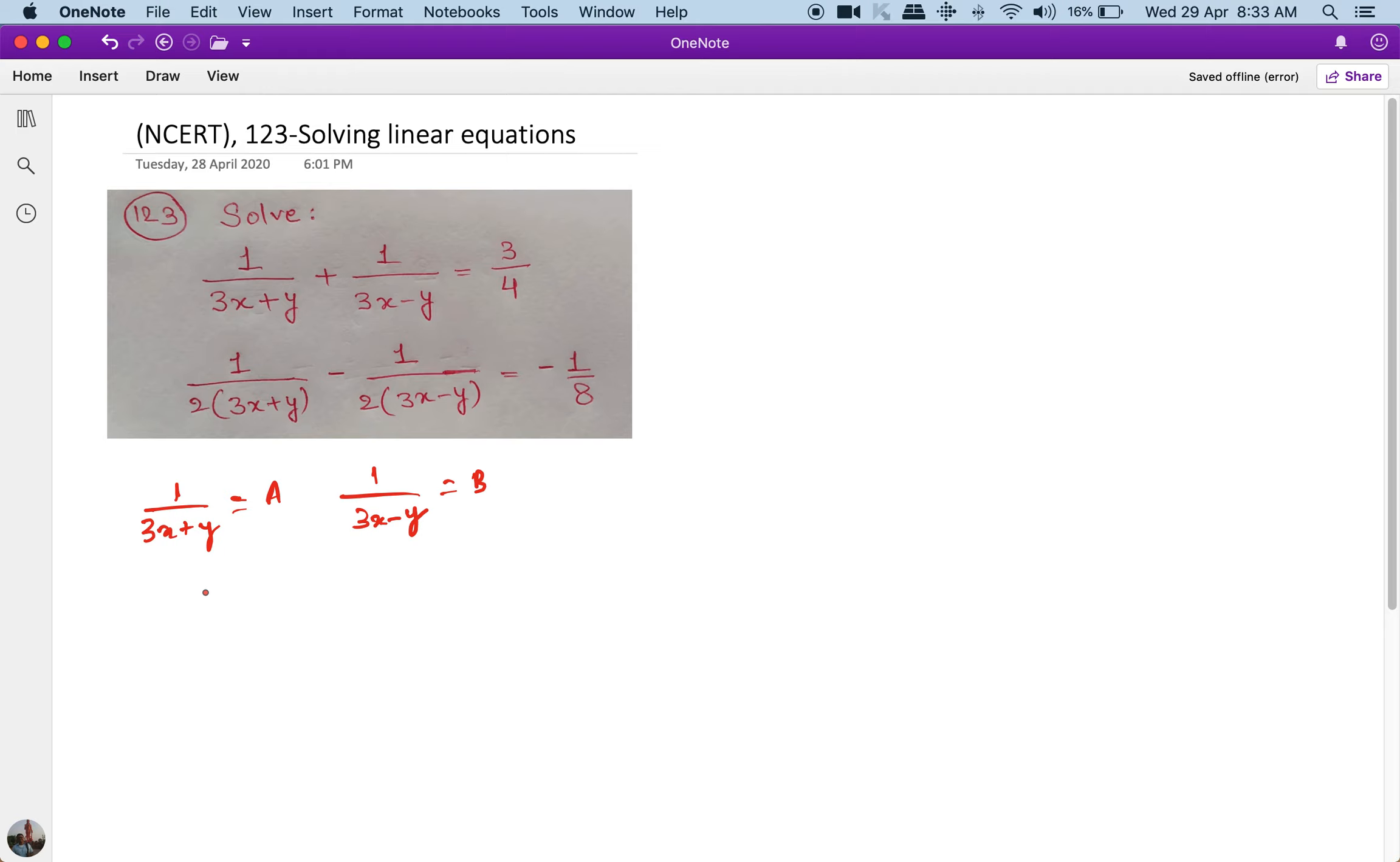So the equations become: A plus B is equal to 3 upon 4. And here it becomes A by 2 plus, sorry this is minus of B by 2, is equal to minus 1 by 8. So the 2 can be taken across from everywhere and it will become 4. Okay.